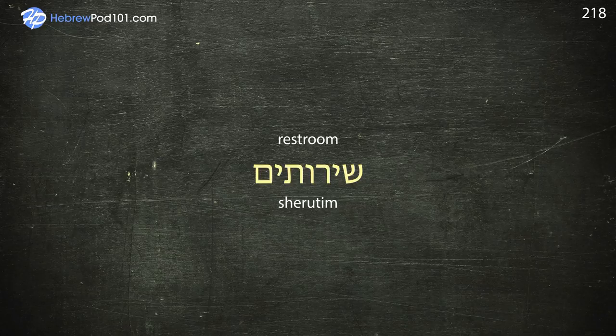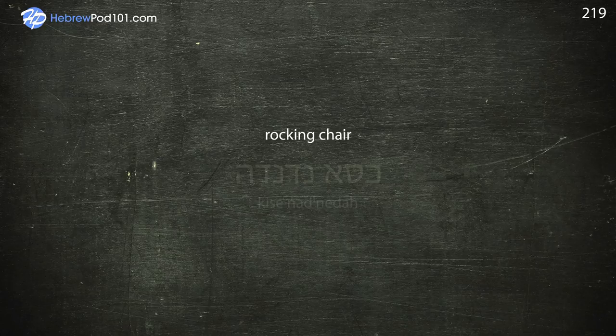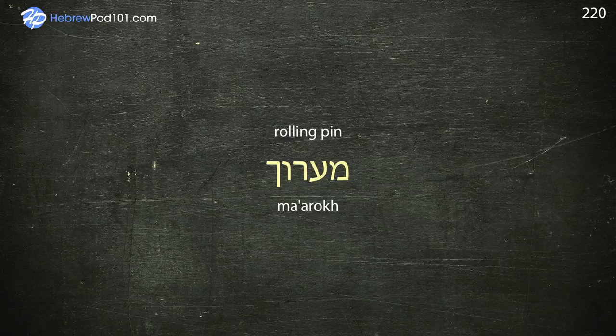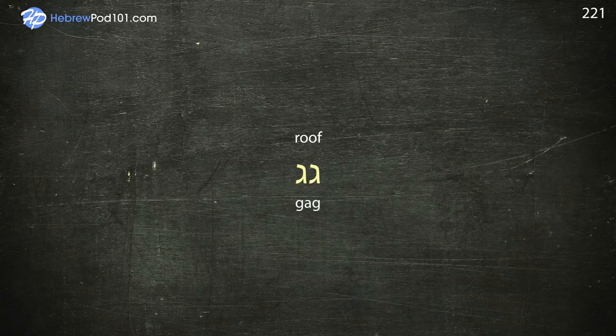Restrooms — Shorotim. Rocking chair — Kisen Nadnedah. Rolling pin — Maroch. Roof. Room — Cheder.